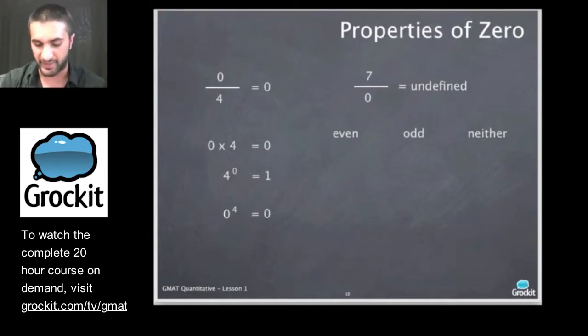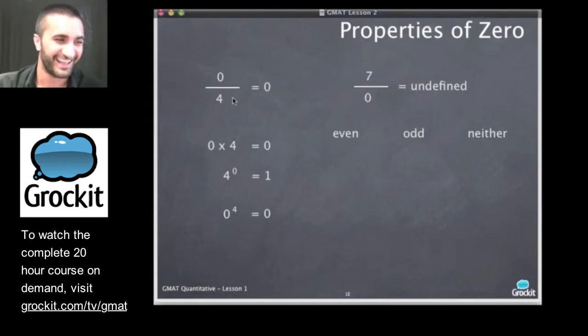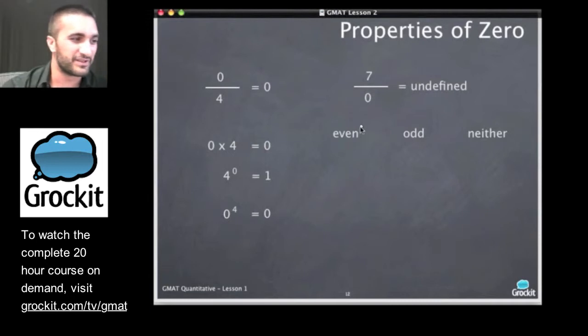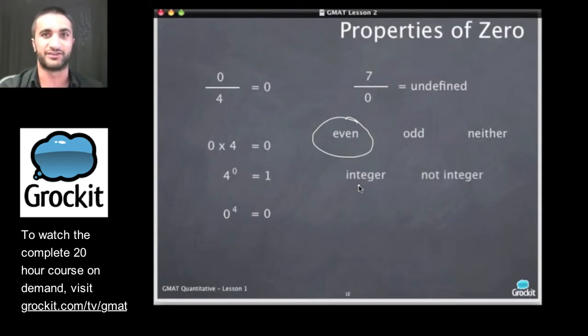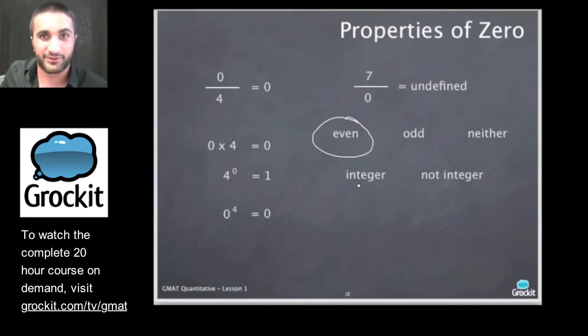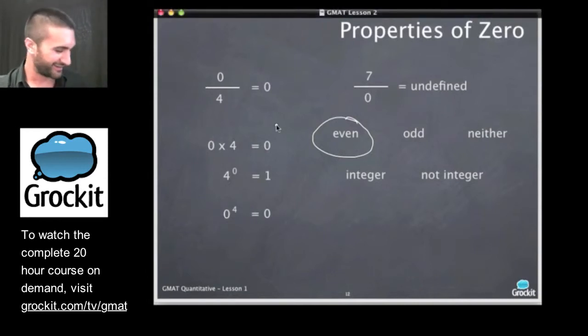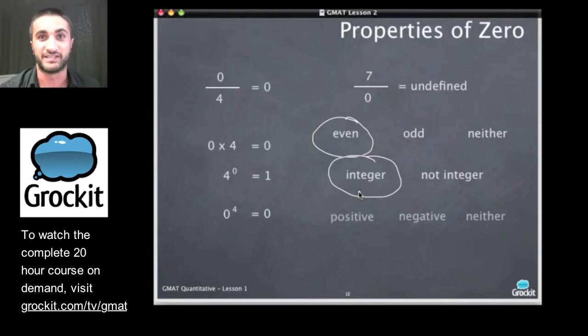Let's ask ourselves some questions about 0. This may trick you up. You may have forgotten some of these properties of 0. Is 0 even, odd, or neither? Which one is it? 0 is actually an even number. It is an even number. How about, is it an integer or not an integer? I'm asking our academic director here at Grockit and our Grockit TV producer, Jake Becker, just to quiz him. Integer or not integer? Integer. He says integer. That's correct.